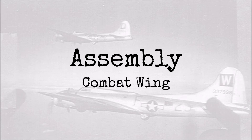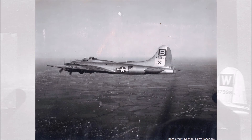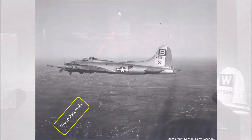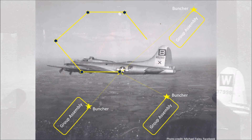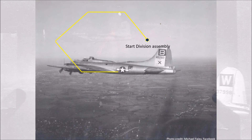After the groups are formed, the next step is the assembly of a combat wing. The assembled groups would fly from their buncher or splasher towards the first point of the combat wing assembly route. This is the first point that had a planned timing in relation to zero hour. The group would then fly a briefed and timed route. Every group had a different time to fly over the first point of the combat wing assembly, thus creating the right sequence. If a group is late, it can shortcut the route to take their correct spot in the formation.